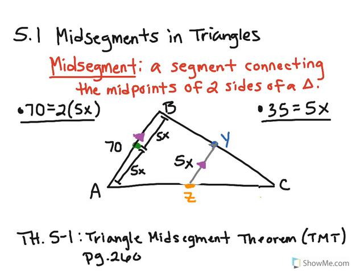And then, of course, let's go ahead and solve these, and we should get the same exact answer. So, on the left-hand side, we're going to say 70 is equal to 2 times 5X, which is 10X, and then divide both sides by 10. And that gives me 7 is equal to X.